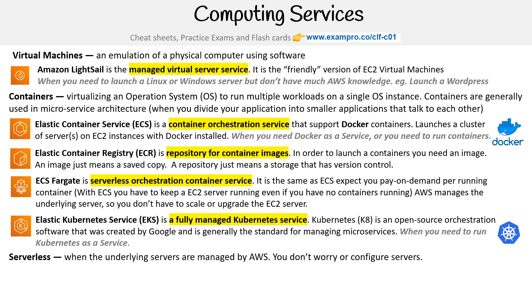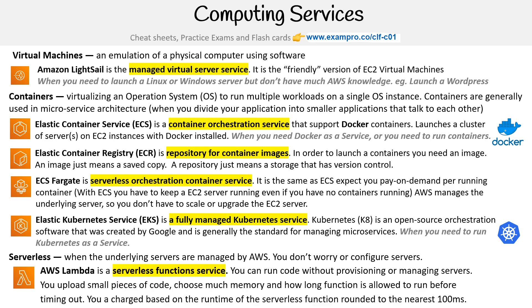Then we have the serverless category, where the underlying servers are managed by AWS — you don't worry about or configure servers. Lambda is a serverless function service where you can run code without provisioning or managing servers. You upload small pieces of code, choose how much memory and how long the function is allowed to run before timing out, and you are charged based on the runtime rounded to the nearest 100 milliseconds.